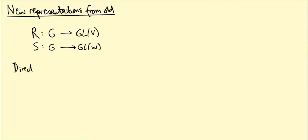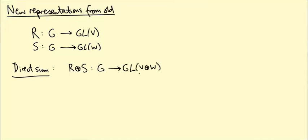We already know one way: the direct sum r ⊕ s. This is a representation of G on the vector space V ⊕ W, whose basis is given by taking a basis of V and a basis of W and using both sets. The dimension is dim(V) plus dim(W). The representation is the block matrix: r(g) in the top-left, 0 off-diagonal, and s(g) in the bottom-right.